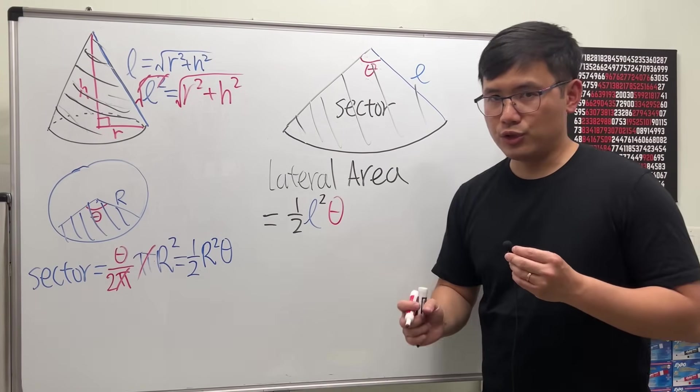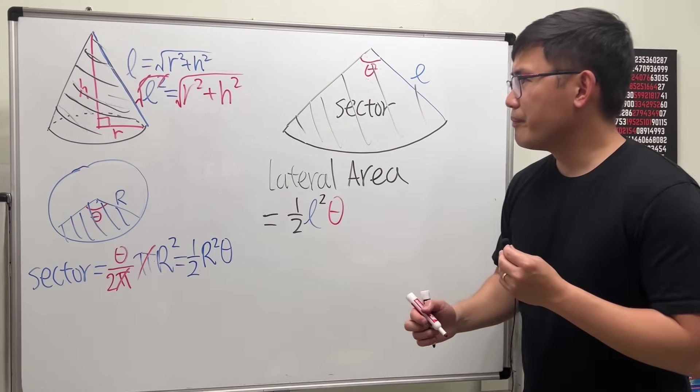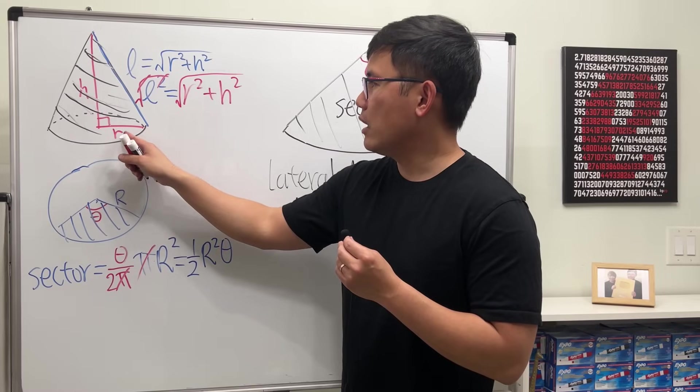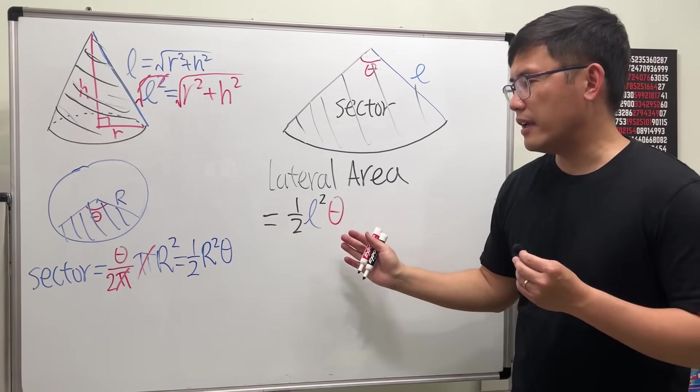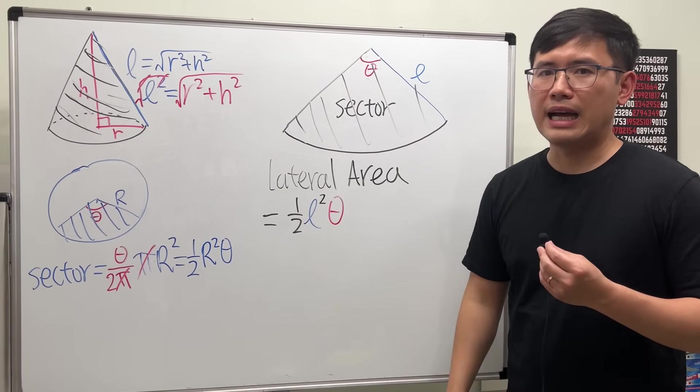Okay, so far so good. But I want to just come up with a formula with r and h. I don't want this theta being involved, so how can we make that happen?